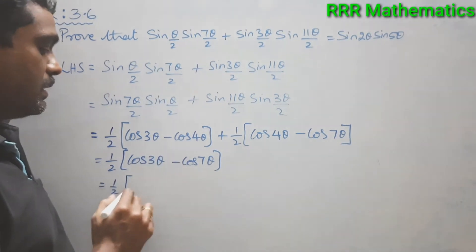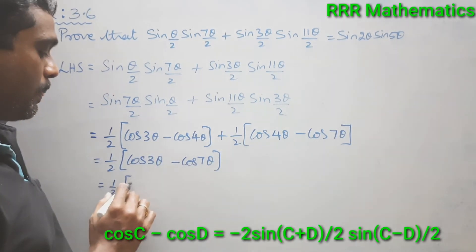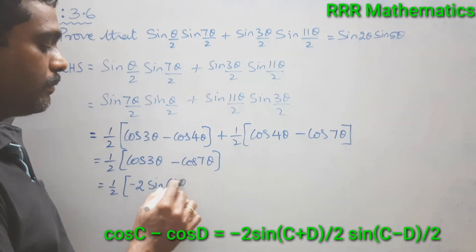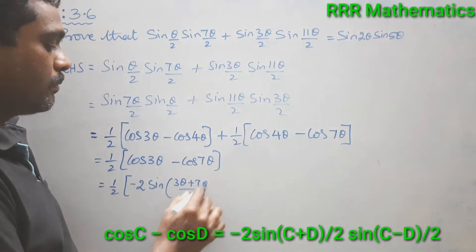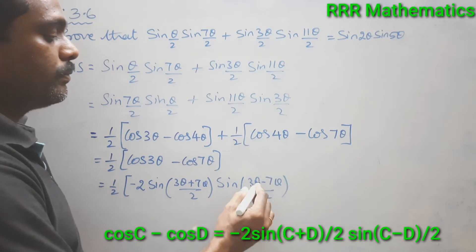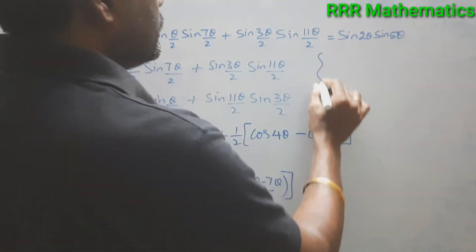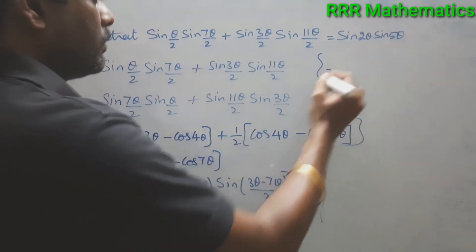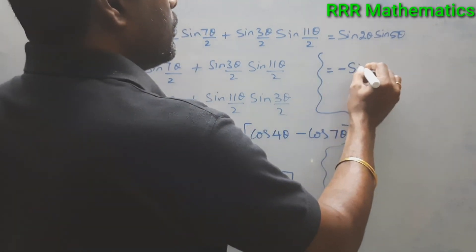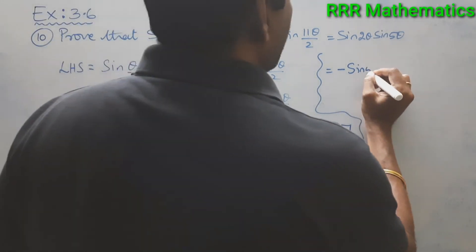Now I apply the identity cos C − cos D = −2·sin((C+D)/2)·sin((C−D)/2). Here C = 3θ and D = 7θ, so C+D = 10θ, and (C+D)/2 = 5θ.